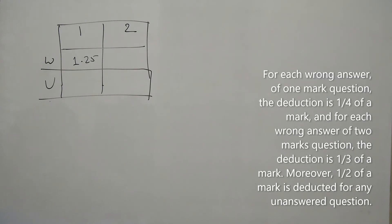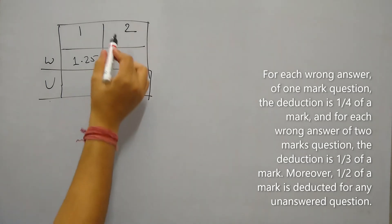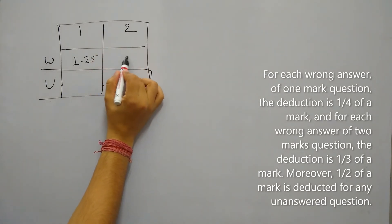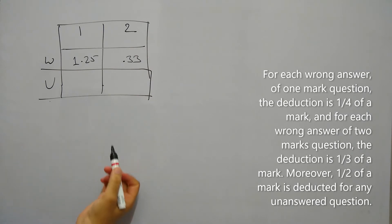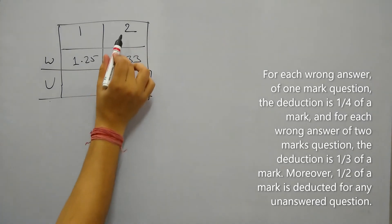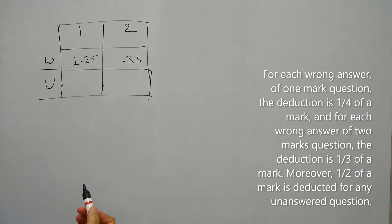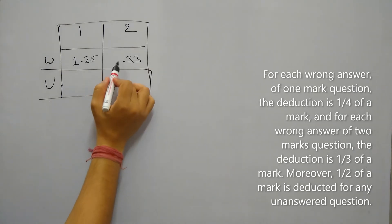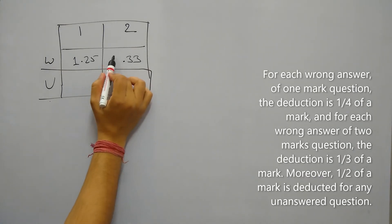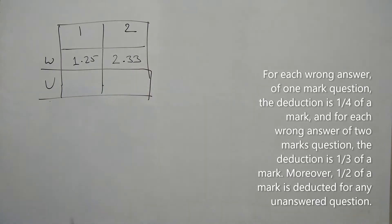Similarly, for a 2-mark question, the deduction is 1/3rd of a mark. So the penalty for a 2-mark question will be 0.33. Since the question itself is of 2 marks, if it is incorrectly answered, then the total mark the student will lose is 2.33.